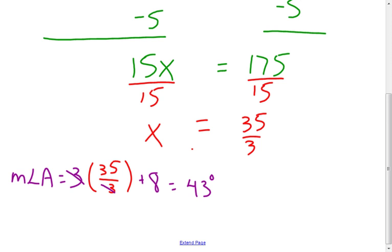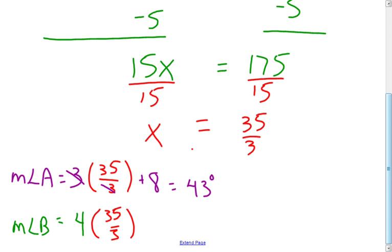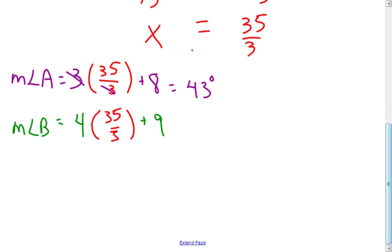Moving on to the measure of angle B, which is 4x plus 9: the measure of angle B equals 4 times 35 thirds, plus 9. The fractions don't work out as cleanly here, but calculating it gives 55 and 2 thirds degrees. Angles can indeed come out to fractional degree measures.